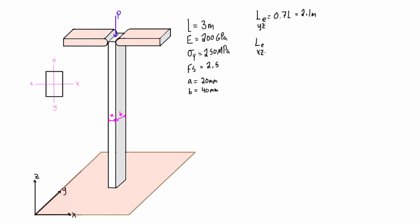Our effective length in the XZ plane is 2L for the fixed-free connection, so that's just going to be equal to 6 meters.